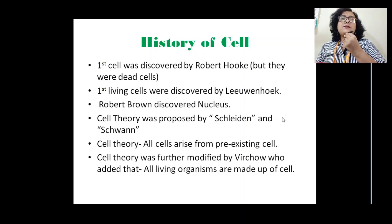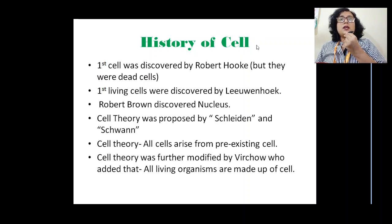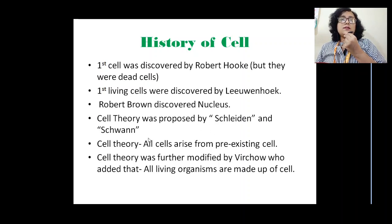Inside the cell, there are different structures, one of which is the nucleus — which we will study in future videos. The nucleus was discovered by Robert Brown. About the functioning of the cell — how it performs different functions, how it divides — all these features were proposed in a theory known as cell theory. Two scientists, Schleiden and Schwann — one a botanist and the other a zoologist — together observed features of the cell and proposed cell theory.